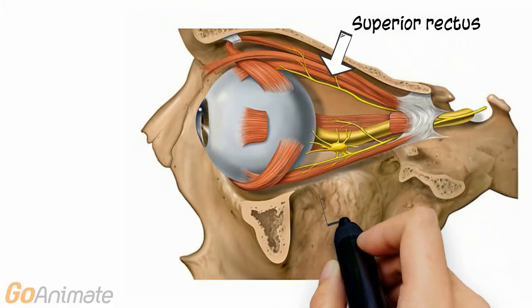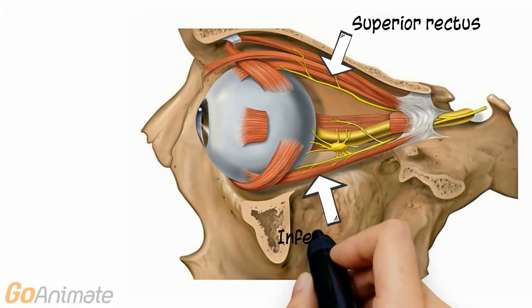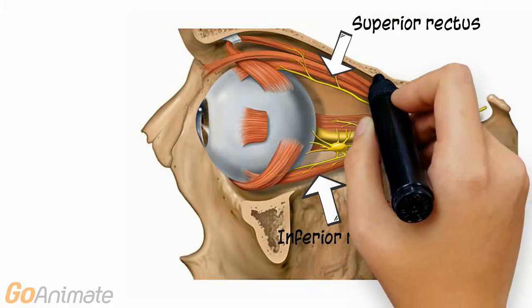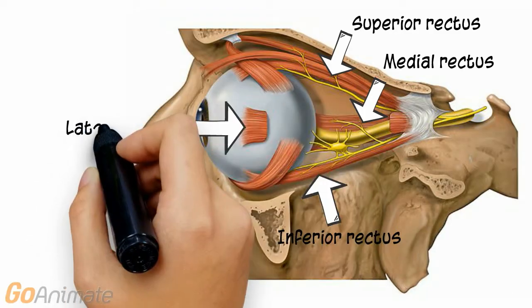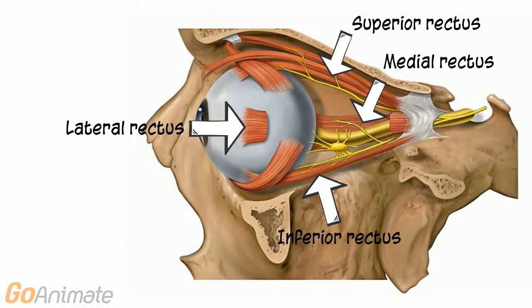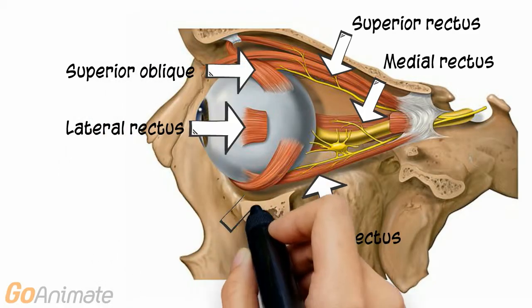There are six eye muscles. These include the superior rectus, inferior rectus, medial rectus, and lateral rectus, which is cut in this picture. There is also a superior oblique and inferior oblique.